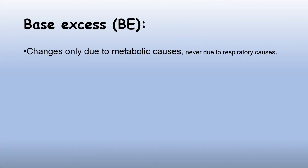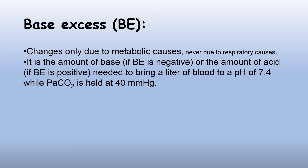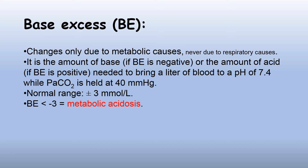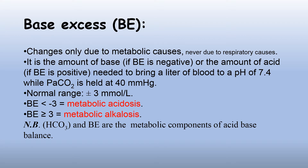Base excess changes only due to metabolic causes. It is the amount of base, if base excess is negative, or the amount of acid, if base excess is positive, needed to bring a liter of blood to a pH of 7.4 while PaCO2 is held at 40 mmHg. Normal range is plus or minus 3 mEq per liter. Base excess less than negative 3 is called metabolic acidosis, while base excess equal to or more than 3 is called metabolic alkalosis. The bicarbonate and the base excess are the metabolic components of acid-base balance.